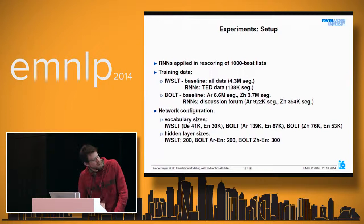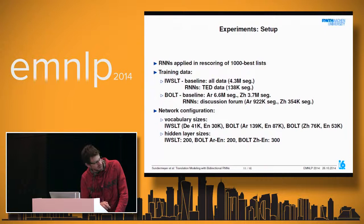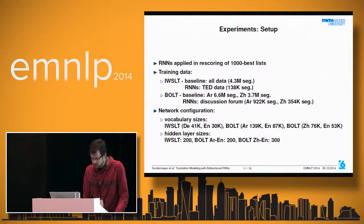Network configurations: for vocabulary sizes, all singleton words are removed to enable unknown word modeling. We use a hidden layer size of 200 for both IWSLT and Arabic-English BOLT, and a hidden layer size of 300 for Chinese-English BOLT.